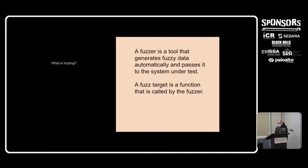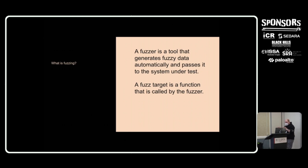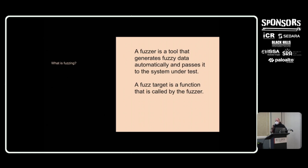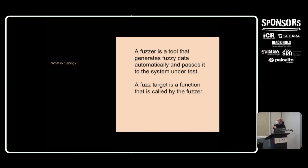A fuzzer is a tool that generates fuzzy data automatically and then passes it into the system under test. So a fuzzer does those two things: it will generate and call your system under test, passing in this data. Another term that comes up is 'fuzz target' — a fuzz target is a function that's actually called by the fuzzer. In the early days of C and C++, you would write a function and your fuzzer would call and execute that function. You could also call this a test case or a fuzzy test case outside of the C world.